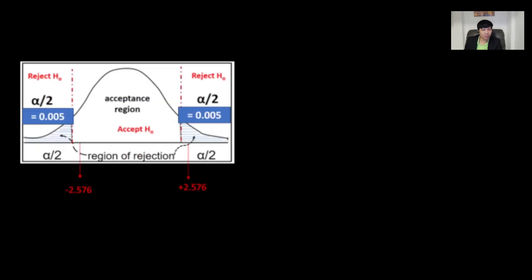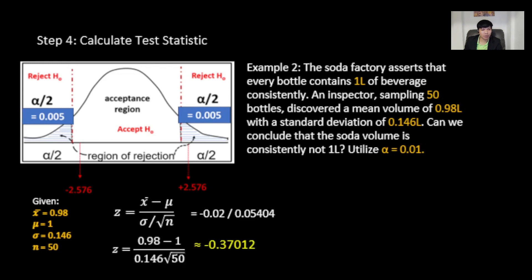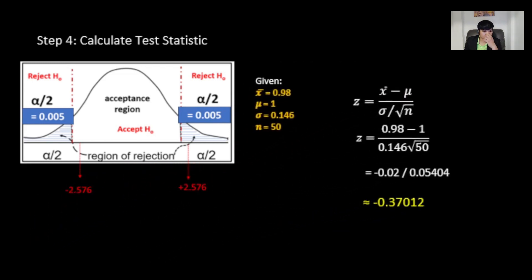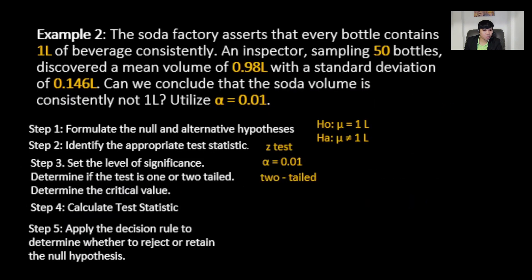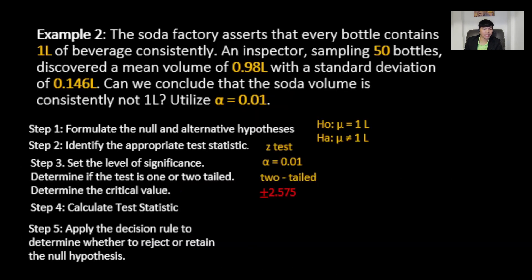Next, calculate the test statistic. Given: sample mean equals 0.98, population mean equals 1, standard deviation equals 0.146, and sample size equals 50. Plugging in all values gives approximately negative 0.370. This falls within the fail-to-reject region. Applying the decision rule: since the computed value falls within the fail-to-reject region, there is not enough evidence to conclude that the mean volume differs significantly from the claimed 1 liter — we fail to reject the null hypothesis.